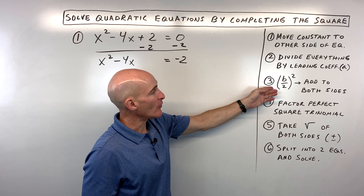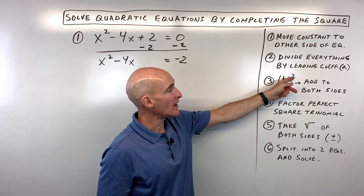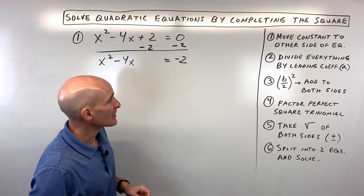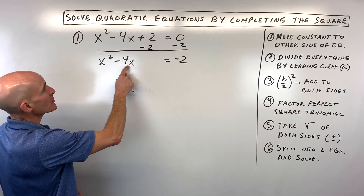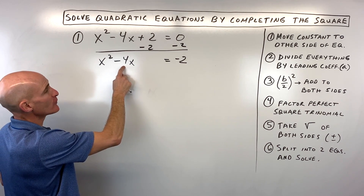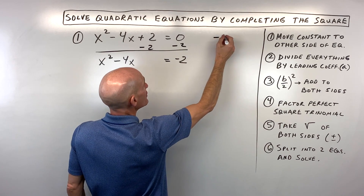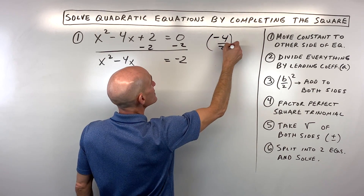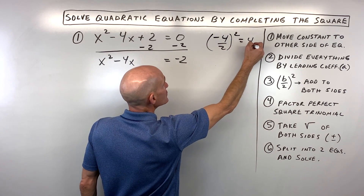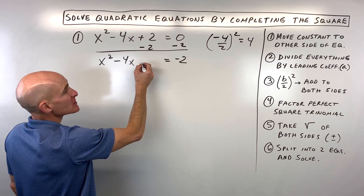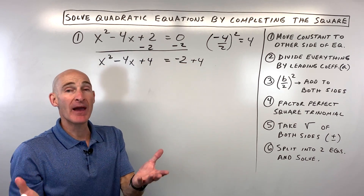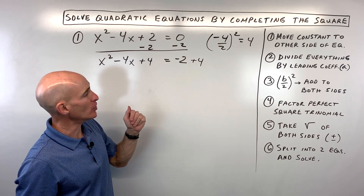For step number 3, figure out what b divided by 2, the quantity squared, is, and add that to both sides — this is the key step in completing the square. The b value is the number in front of x. So let's work it out on the side: negative 4 divided by 2 is negative 2, and negative 2 squared is 4. We add 4 to both sides to keep the equation balanced without changing it.